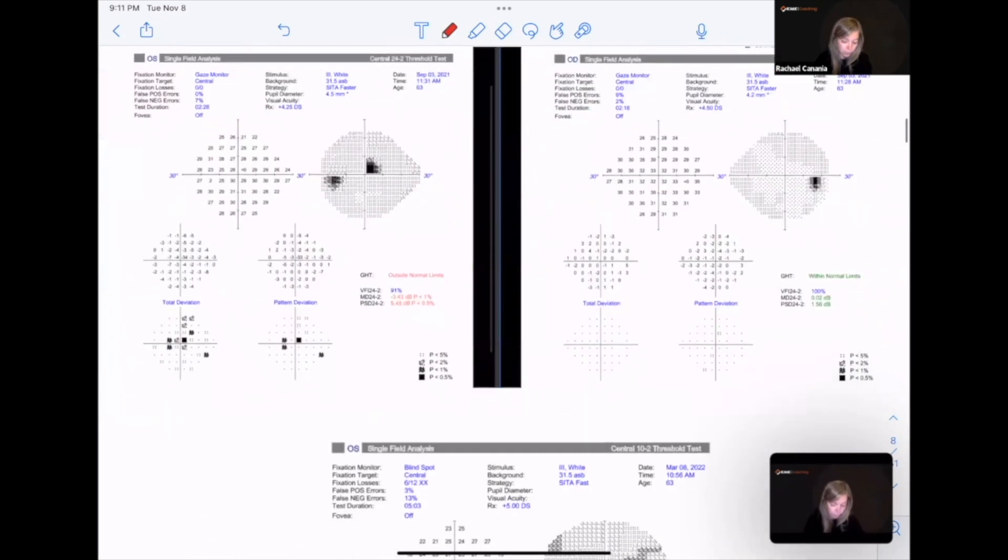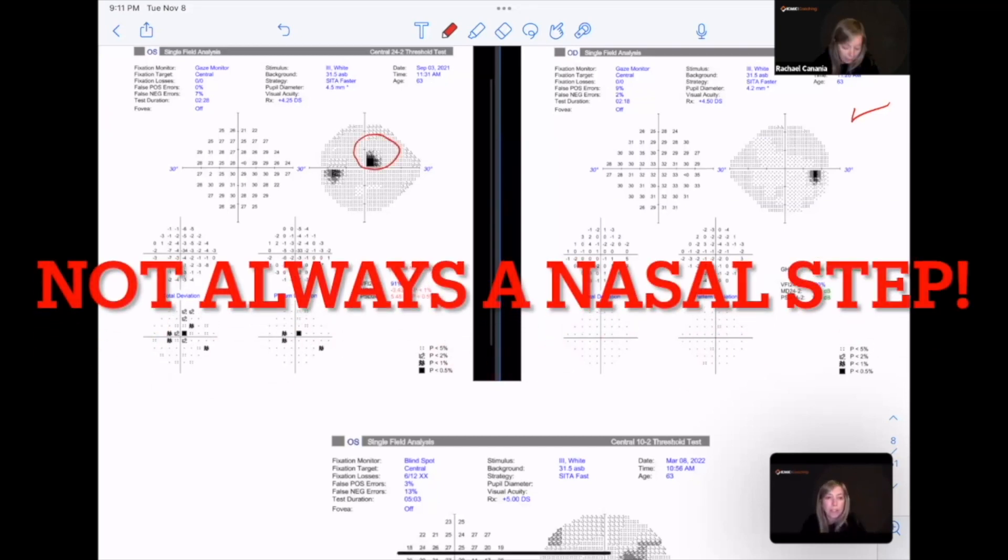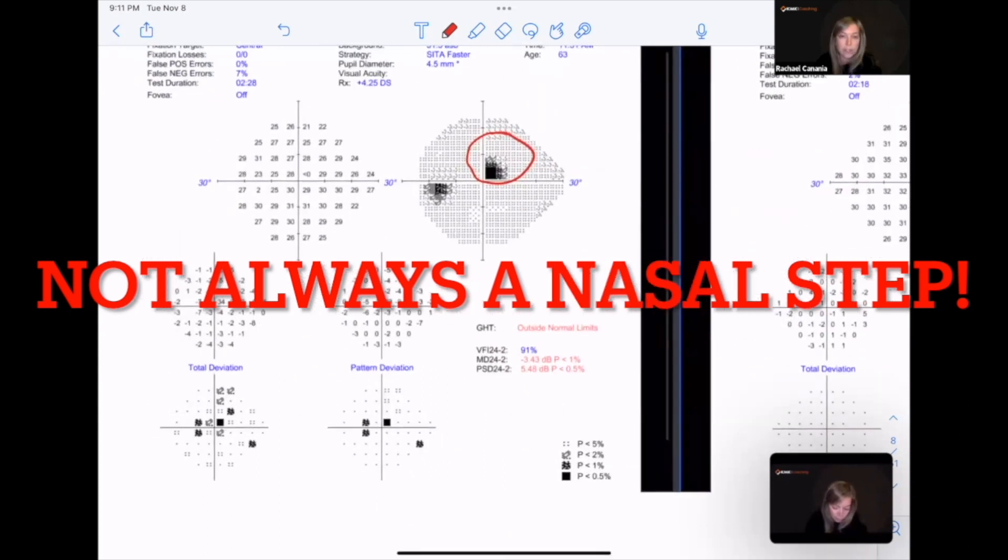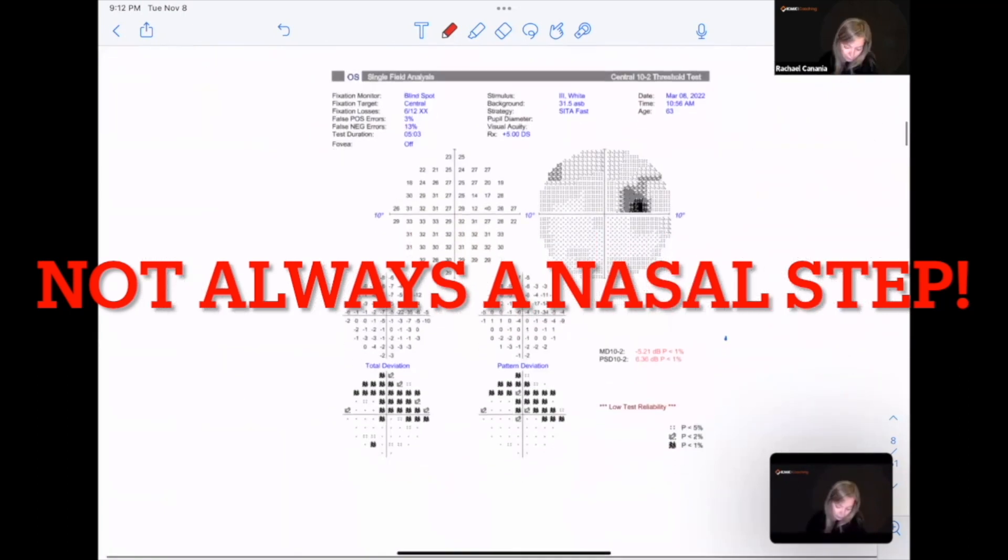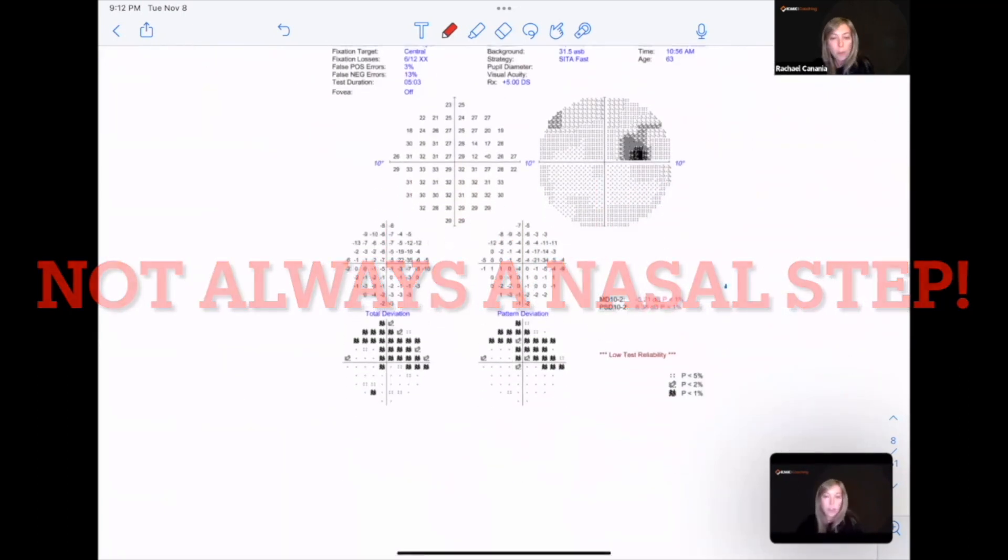Here's his field. The right eye looks great. The left eye has superior nasal loss and it's really close to fixation. Here's a 10-2. Look at how much blown up this defect is on the 10-2.